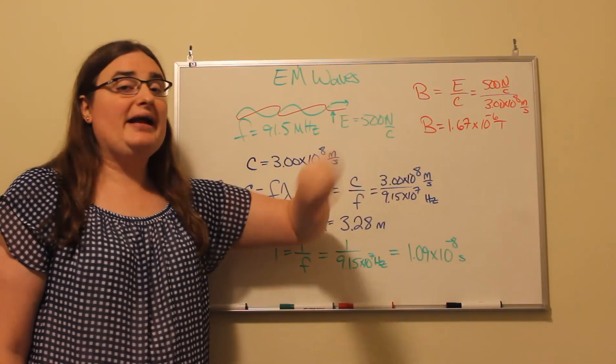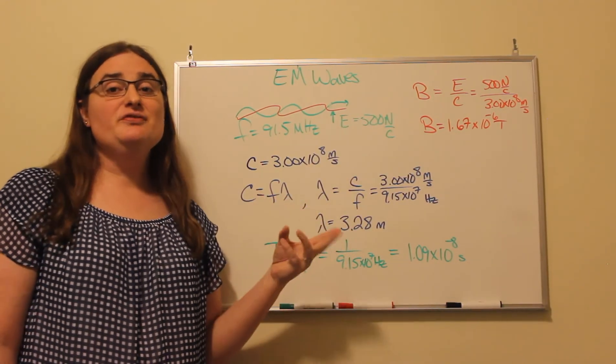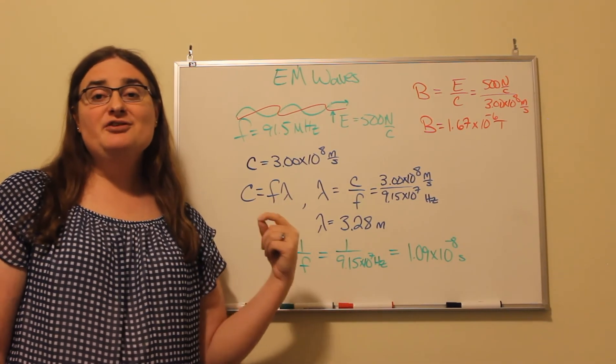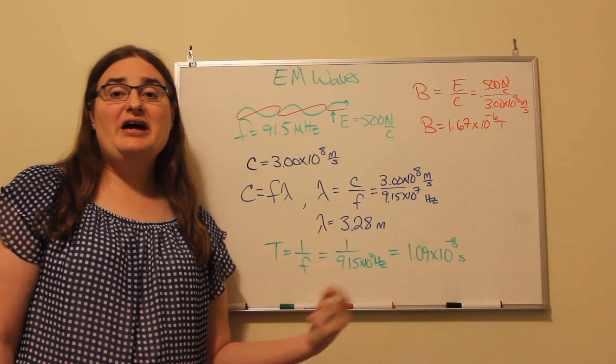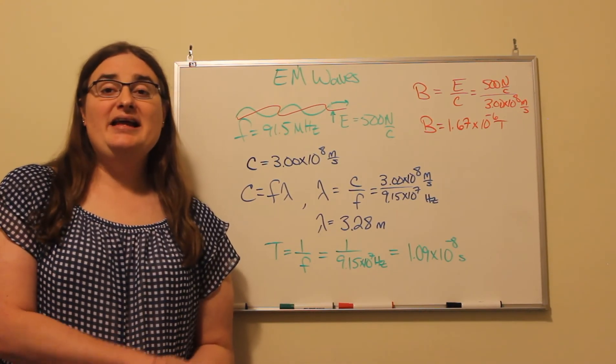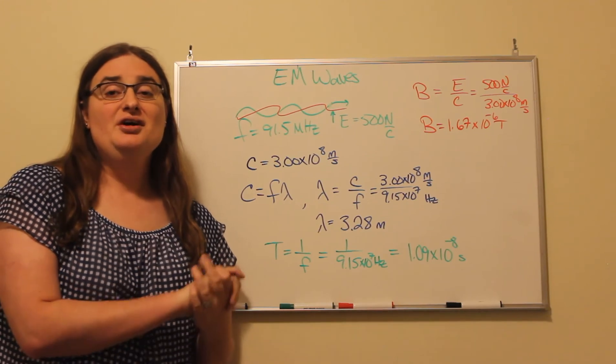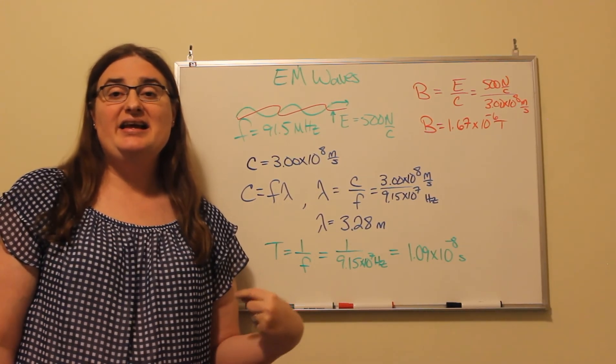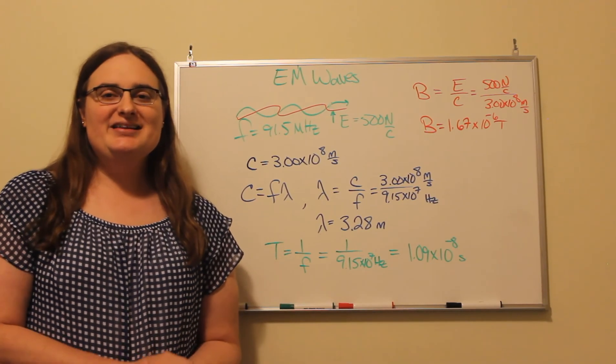Specifically, the magnetic field amplitude is the electric field amplitude divided by the speed of light. So if I take 500 newtons per coulomb and divide by 3 times 10 to the 8 meters per second, I get a magnetic field oscillation with an amplitude of 1.67 times 10 to the negative 6 tesla. Thanks for watching.